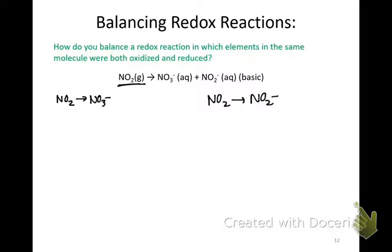We balance the reaction the way we normally would. Our N's are balanced, so we balance our oxygens with water and our hydrogens with protons. The charge on the reactant side is neutral and on the product side is plus one, so we'll add an electron.